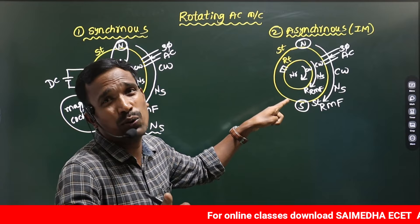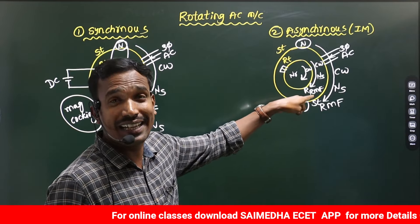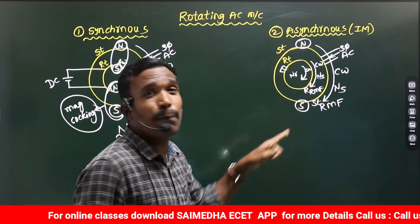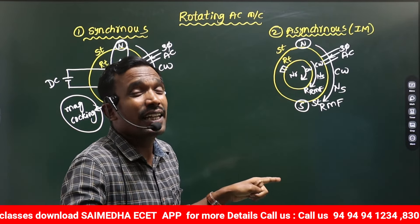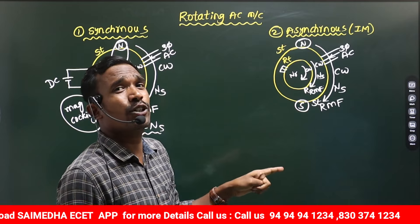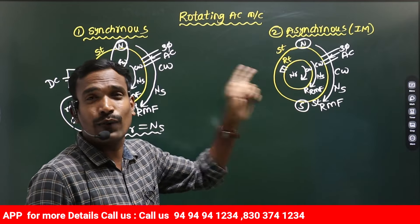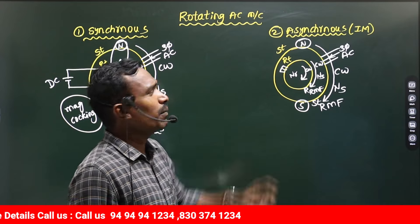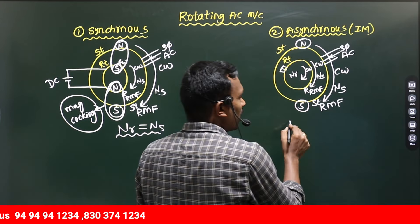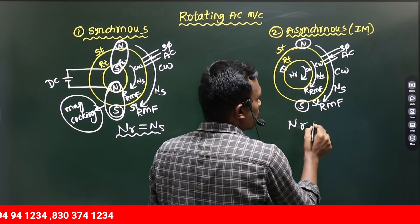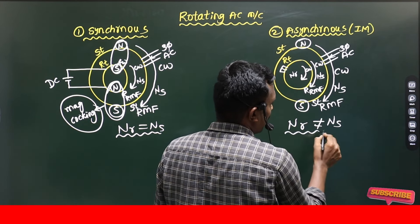According to Lenz's law, the rotor has to rotate in clockwise direction to oppose the relative motion. In order to reduce the relative motion, the rotor rotates in clockwise direction. So finally, the rotor will rotate in clockwise direction, but the rotor speed is not equal to Synchronous speed.